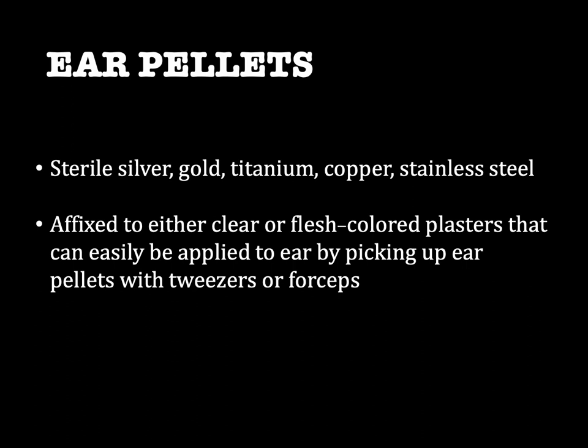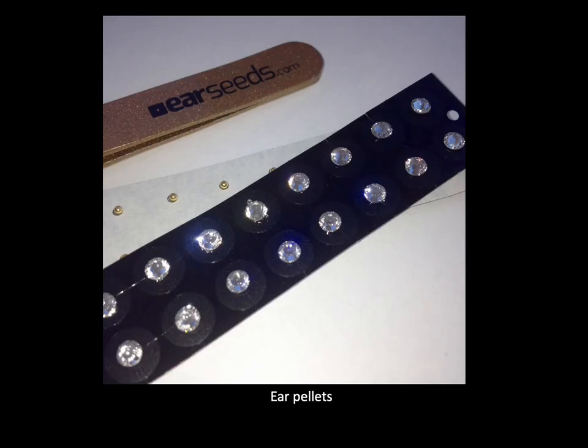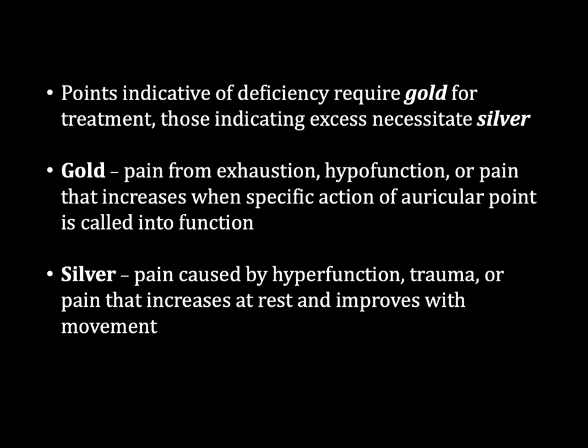Ear pellets are a convenient way of administering ear acupuncture treatment. They come in sterile silver, gold, titanium, copper, and stainless steel. They are affixed to either clear or flesh-colored plasters that can easily be applied to the ear by picking up the ear pellets with tweezers or forceps. The size of ear pellets is perfect for discrete stimulation of the point and almost unnoticeable in the ear. Points indicative of deficiency require gold for treatment; those indicating excess necessitate silver. Use gold for pain from exhaustion, hypofunction, or pain that increases when the specific action of an auricular point is called into function. Silver is used for pain caused by hyperfunction, trauma, or pain that increases at rest and improves with movement.